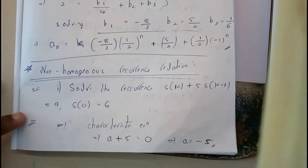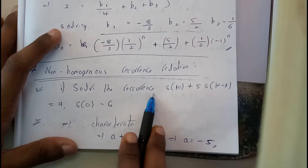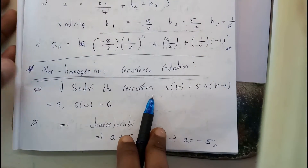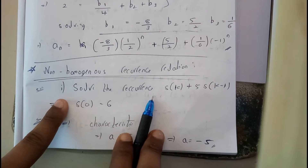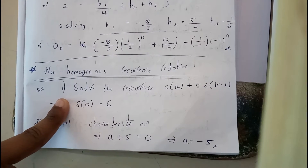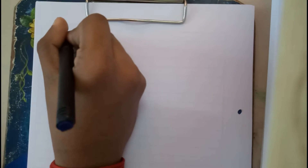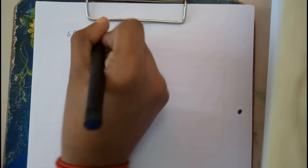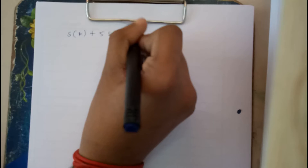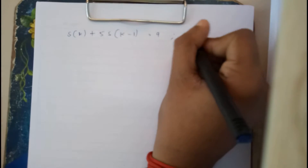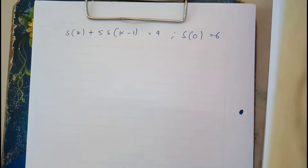Basically, assume this as a homogeneous equation where we remove the right-hand side, set it to 0, find the characteristic equation, and continue as with the homogeneous equation. I'll be doing two problems to explain clearly. The first problem is: s(k) + 5·s(k-1) = 9, where the initial value s(0) = 6.